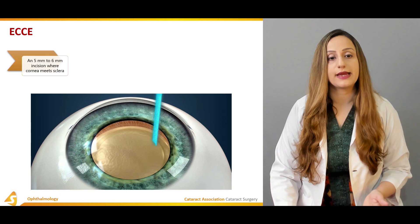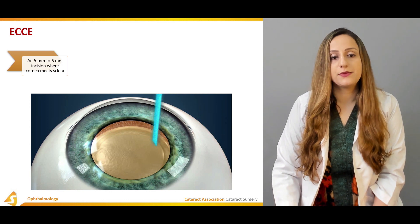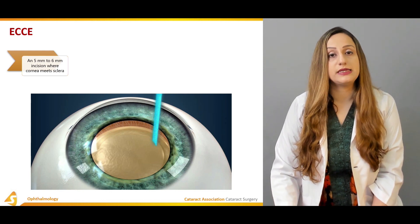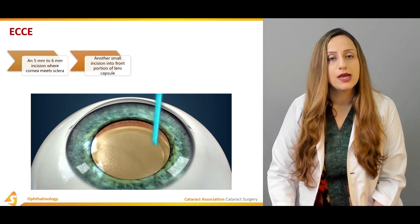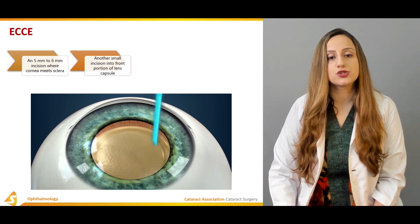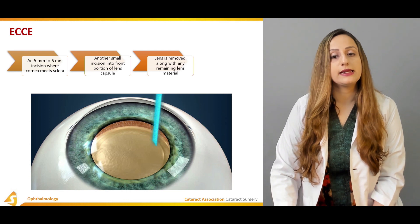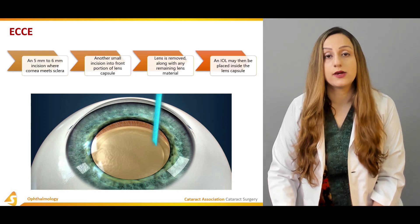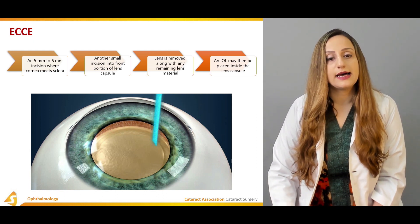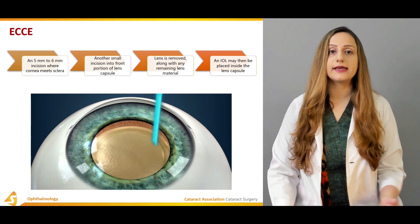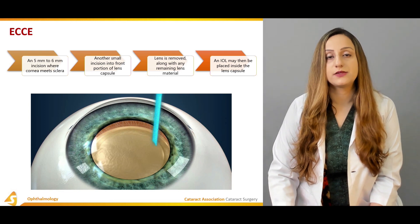For extracapsular cataract extraction, the steps involve a five to six millimeter incision where the cornea meets the sclera. Another small incision is made into the front portion of the lens capsule. The lens is removed along with any remaining lens material. An IOL — intraocular lens — may then be placed inside the lens capsule, which is a prosthetic lens replacing the previously opacified natural lens.